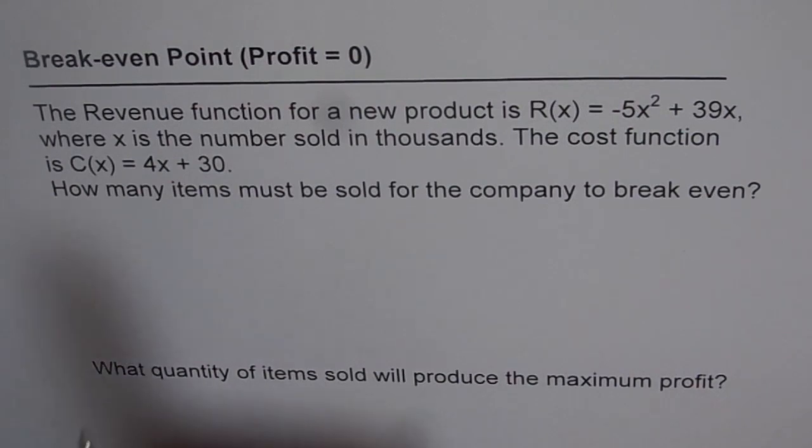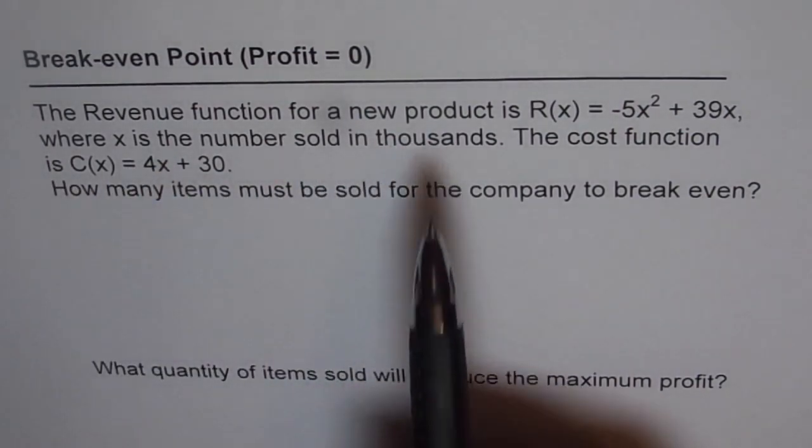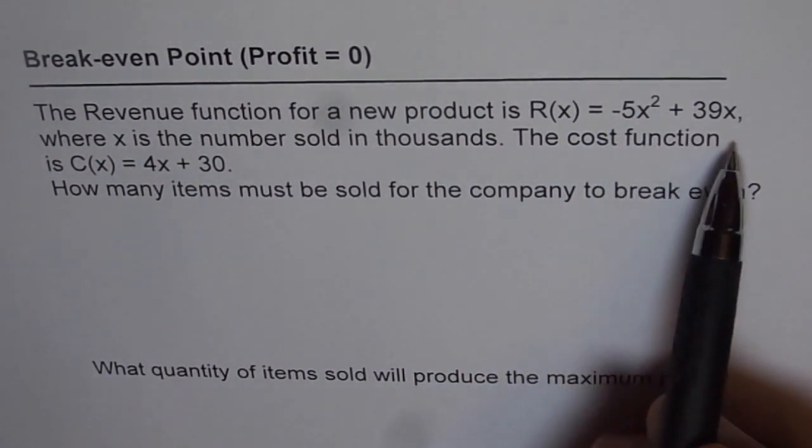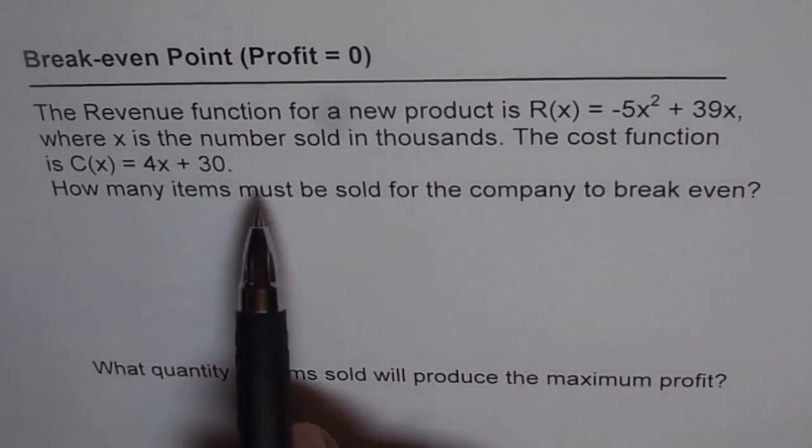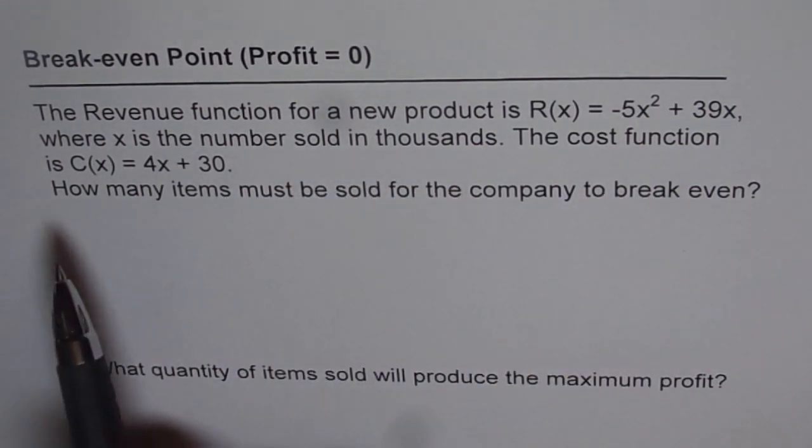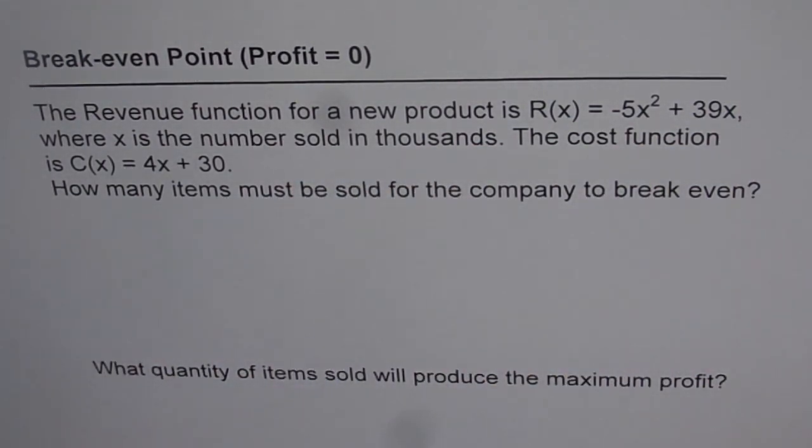The question here is, the revenue function for a new product is R(x) equals minus 5x² plus 39x, where x is number sold in thousands. The cost function is C(x) equals 4x plus 30.